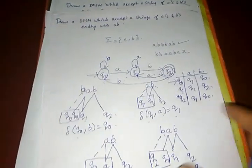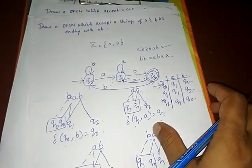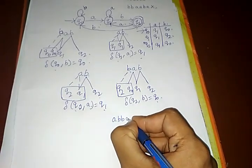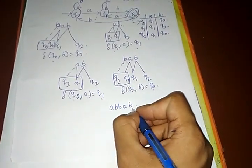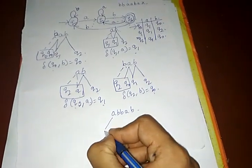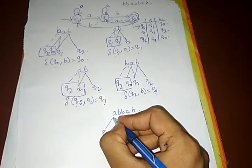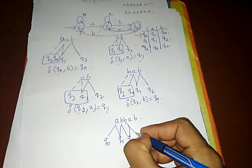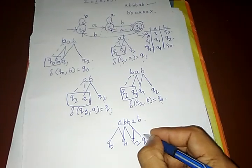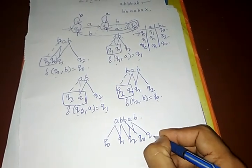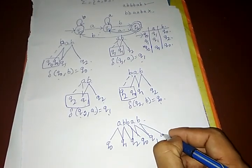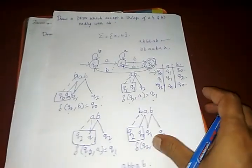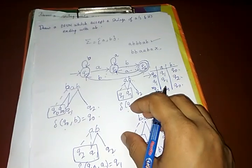This is a simple DFSM problem for strings ending with 'b'. Let's trace an example: the string A, B, B, A, B. Starting at Q0: A → Q1, B → Q2, B → Q0, A → Q1, B → Q2, which is the accepting state. So the string 'ABBAB' is accepted since it ends with B. This demonstrates the DFSM working correctly.